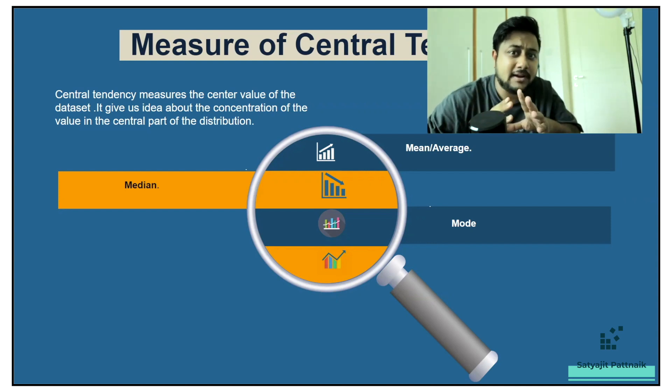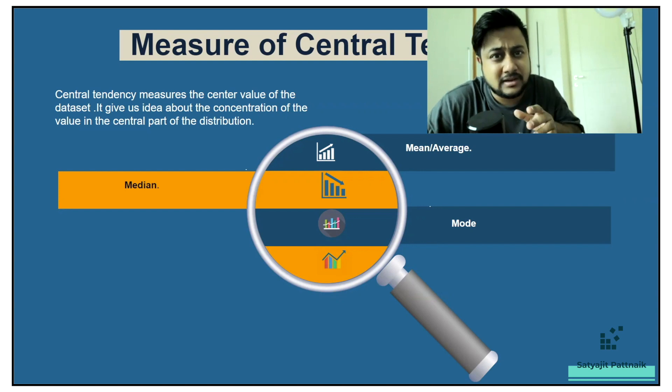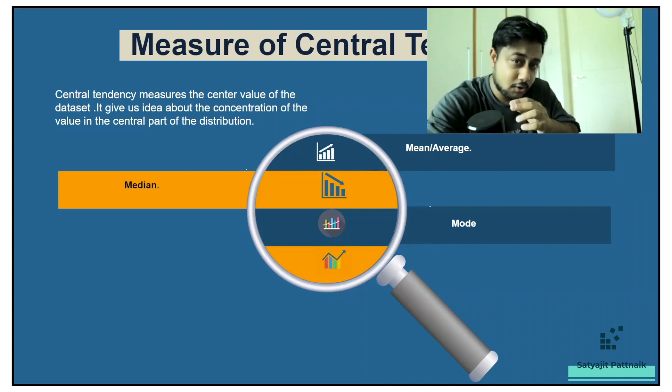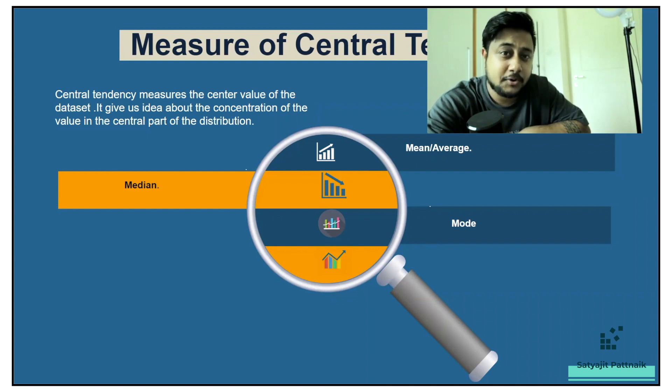Now, many of you might have known that we usually use mean, median or mode in terms of null value imputation. Many of the people tell that we have to use mean as a null values. If you have null values, just use mean. Some people tell just use median. Some people tell just use mode, but nobody really explains when and where and how to use it. Before knowing about how to use it, we shall be talking about the individual differences between mean, median and mode.